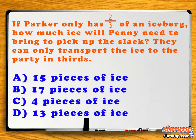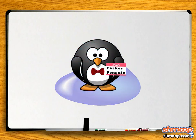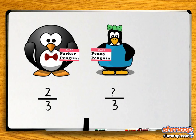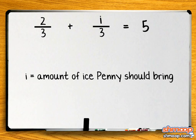Here are your options. First, we need to formulate an equation to thaw out this problem. Parker has two-thirds of an iceberg — that's the easy part. We need to know how many thirds Penny needs to bring in order to equal five. Our equation should be: two-thirds plus i over three equals five. And we're trying to solve for i — i is the amount of ice Penny should bring.